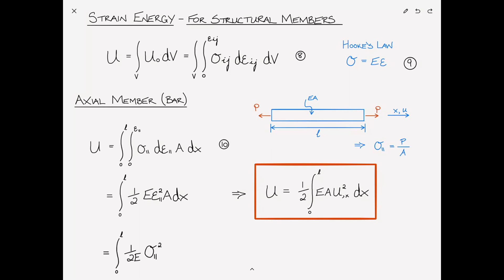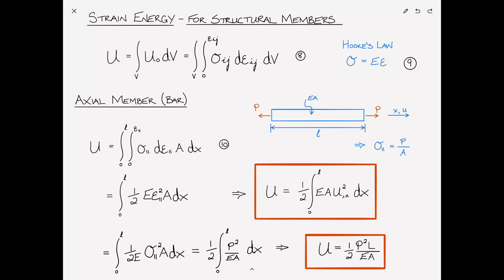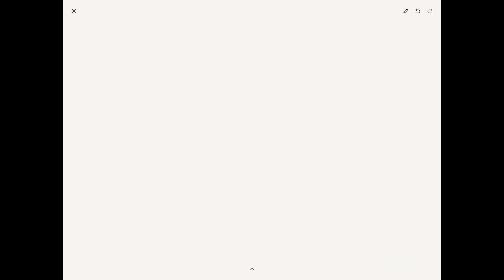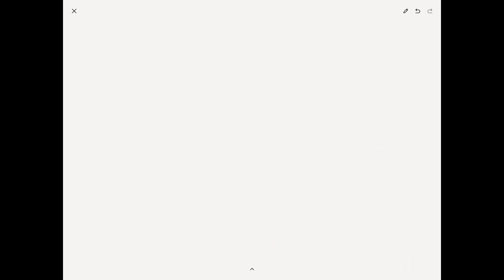This can also be written in terms of stresses rather than strains as the integral from zero to L of one over 2E times sigma_11 squared times A dx, which equals one-half the integral from zero to L of P squared divided by EA dx. That integrates simply to give U equals one-half P squared L divided by EA. This is an alternate form — equations eleven and twelve.